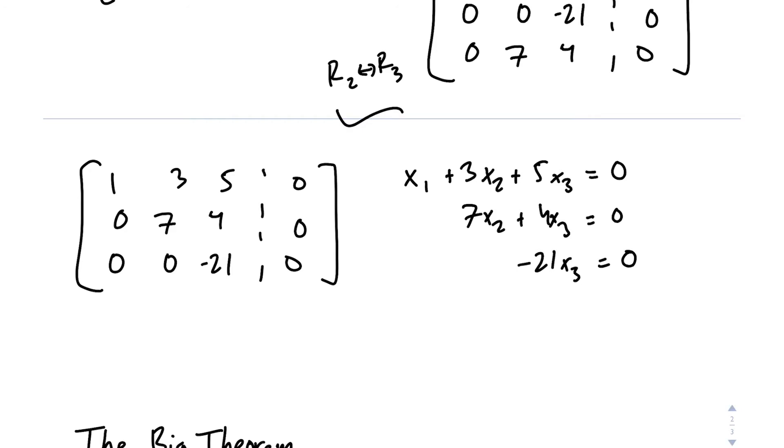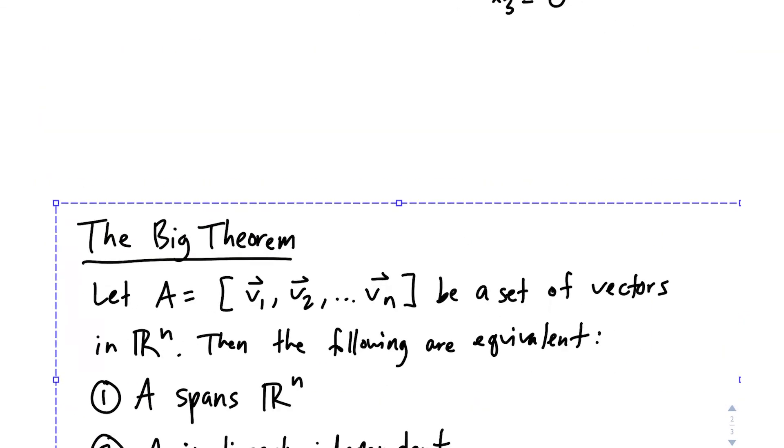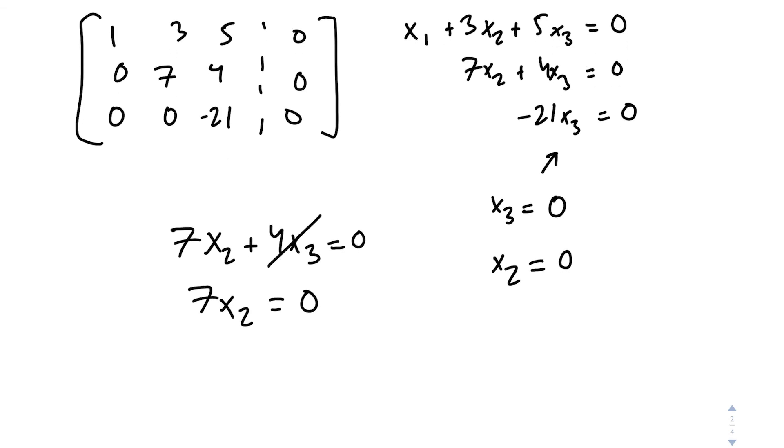This looks like a triangular form of equations. So let's just back substitute by solving. So we can solve for x3 here. Well, the only thing we can multiply negative 21 by to get 0 is 0. So we get x3 equals 0. We set up the next equation. The big theorem is really just in the way. So now we set up the next equation. 7x2 plus 4x3 equals 0. We've already solved for x3, so let's plug that in. We just get 0. So that whole term goes away. 7x2 equals 0. It looks like x2 is also going to be 0. If you see where this is going, give yourself a little pat on the back.